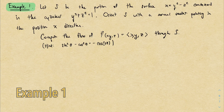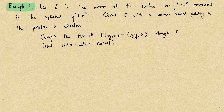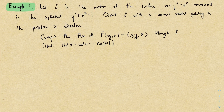Let's look at an example. Here, S is the portion of the surface x equals y squared minus z squared which is contained in the cylinder y squared plus z squared equals 1. The problem says we orient the surface with a normal vector pointing in the positive x direction. The problem wants us to compute the flux of some vector field through the surface. There's also a hint — we'll use it when we need it.